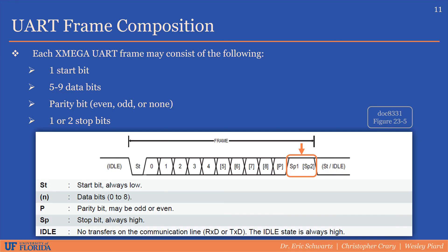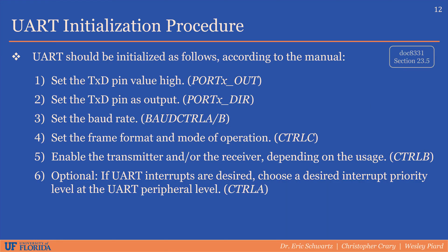Now we can discuss the steps required to initialize the UART system for asynchronous communication. According to the manual, the transmit pin needs to be configured as an output with a high voltage level initially, the baud rate needs to be configured, the frame format and communication mode need to be set, and finally the transmitter and/or receiver need to be enabled if applicable. Optionally, interrupts can be utilized, which requires additional configurations.